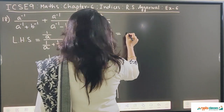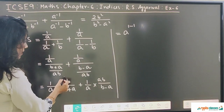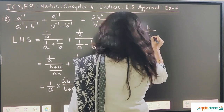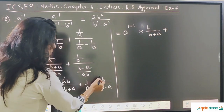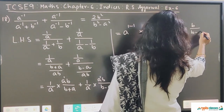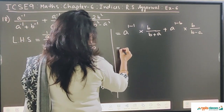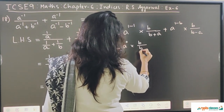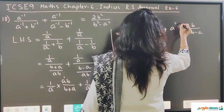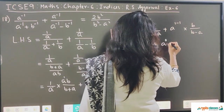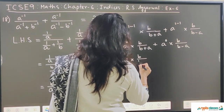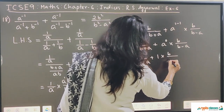Using the property of indices, we write a to the power 1 minus 1, because the power is 1 in both, and they are in division form, so 1 minus 1, giving a to the power 0, into b upon b plus a. There is a plus sign in between. Same thing happens here: a to the power 1 minus 1 is a to the power 0, into b divided by b minus a. Anything to the power 0 is 1, so we get 1 into b upon b plus a, plus 1 into b upon b minus a.